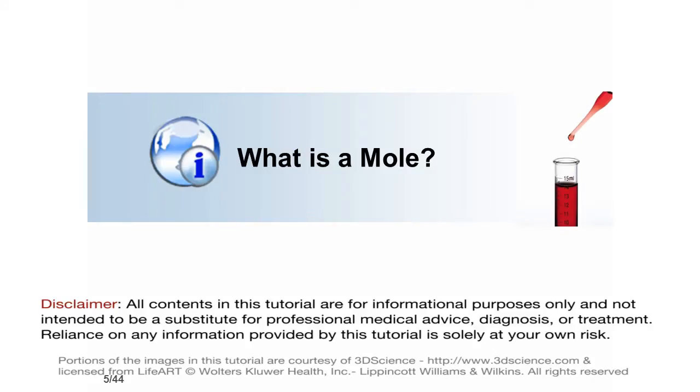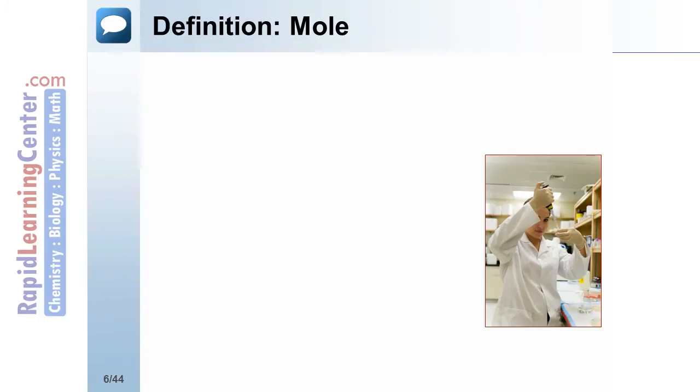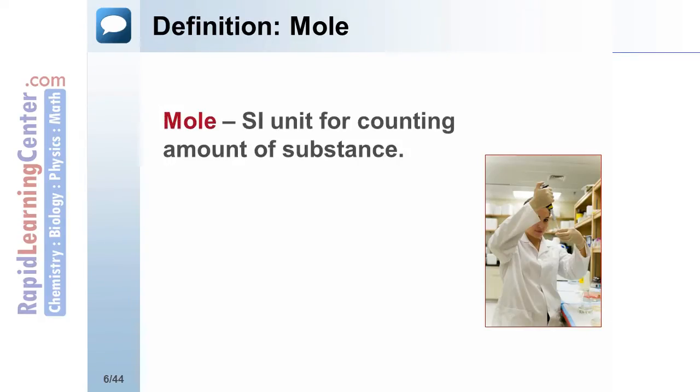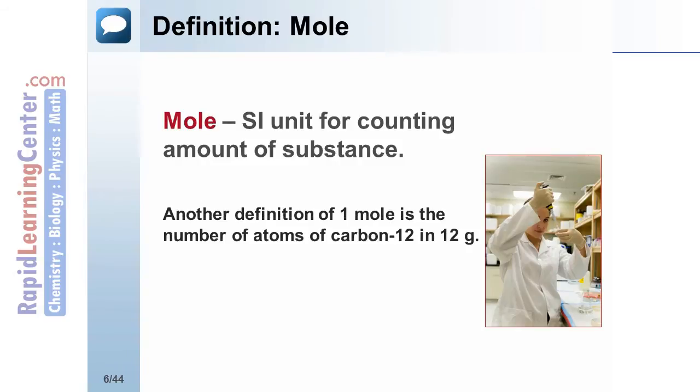What is a mole? It's not the furry brown creature. A mole is a counting unit. Another definition of mole is the number of atoms of carbon-12 in exactly 12 grams. The only acceptable abbreviation for mole is M-O-L, not M. M stands for meters or mass.